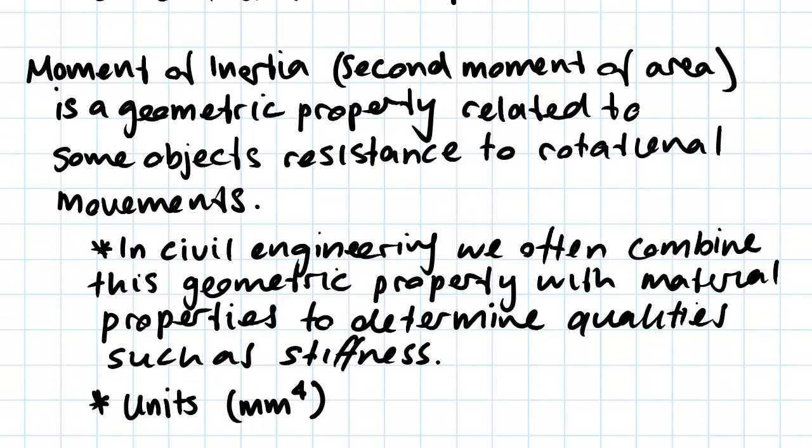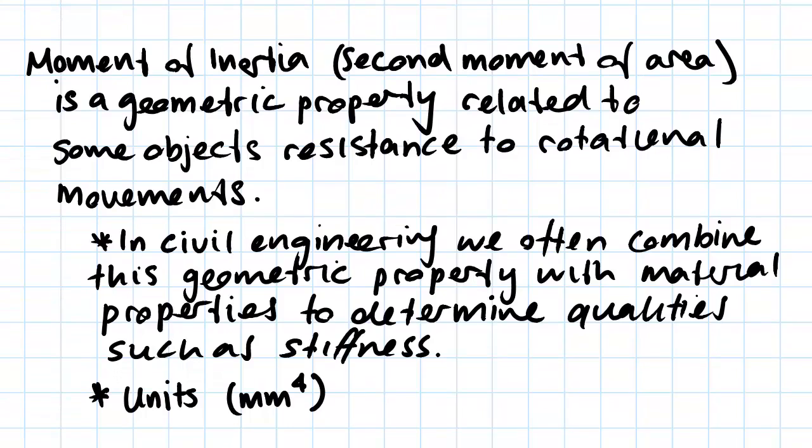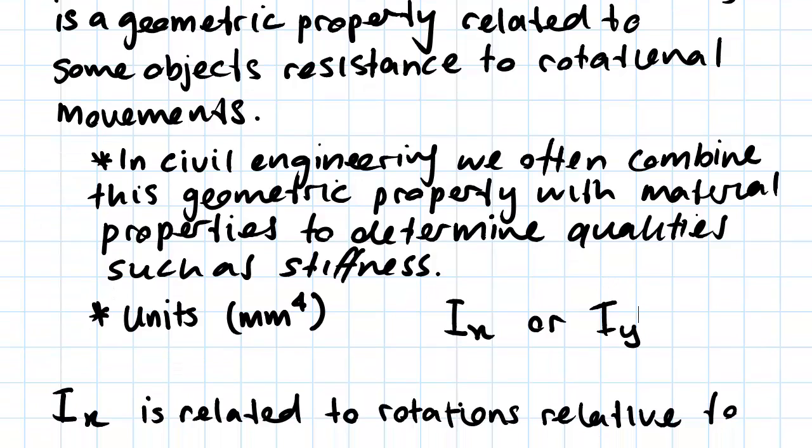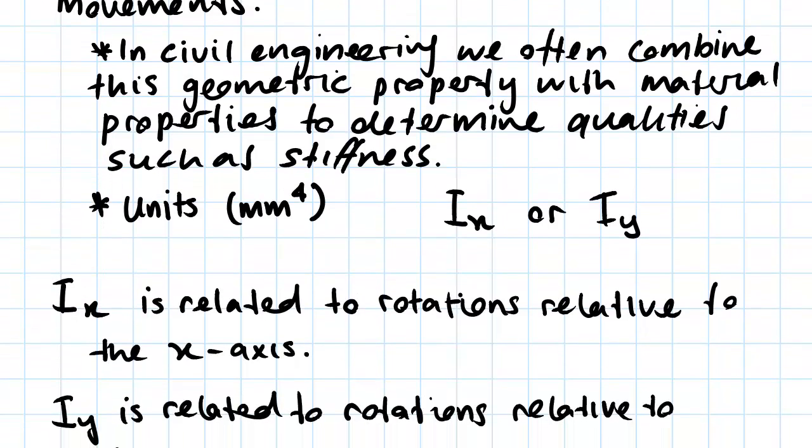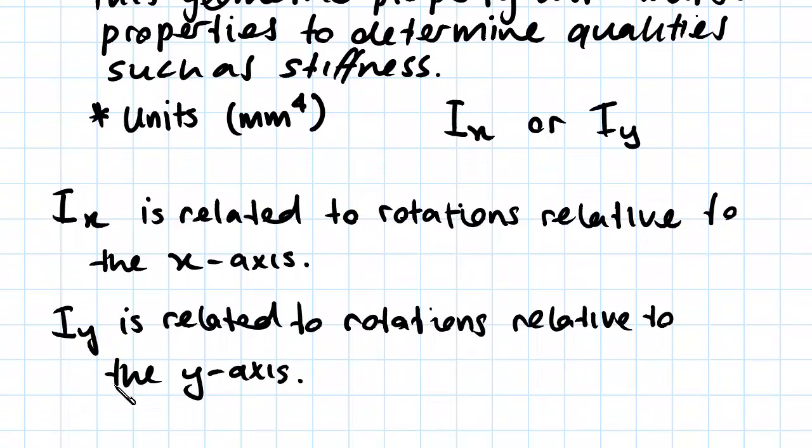The units for moment of inertia are millimeters to the fourth, and we denote moment of inertia as either Ix (I subscript x) or Iy (I subscript y), depending on which axis we are measuring relative to. Ix is related to rotations relative to the x-axis, and Iy is related to rotations relative to the y-axis.